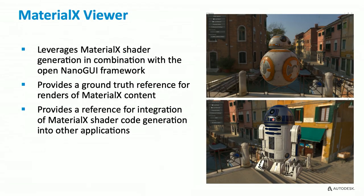Combining these two features enabled the construction of a MaterialX viewer, where code generation is used to convert content into GLSL for the application viewport. We started a public prototype of this project in 2019, building on in-progress work at Autodesk, and it's now been published back to MaterialX master. One important advantage of a standard viewer in the repository is that it provides a ground truth reference for renders of MaterialX content. In the two images on screen you can see ILM XLab production materials for BB-8 and R2-D2 rendering in the MaterialX viewer. These two characters have been shared with colleagues at Adobe and Algorithmic for the demos later in the session.